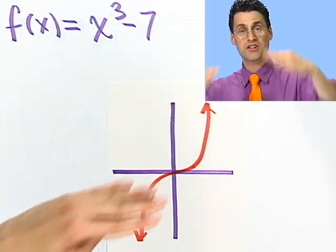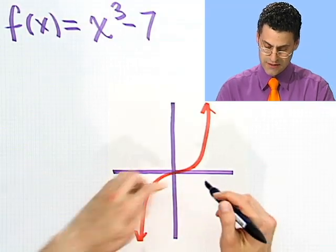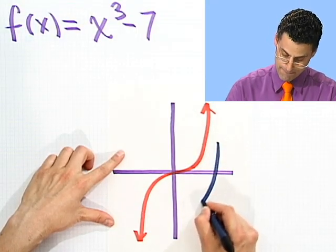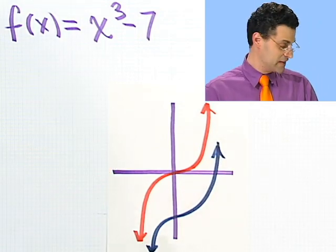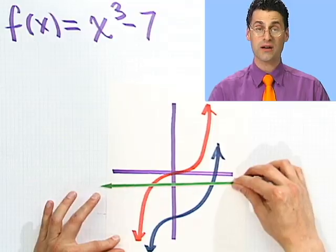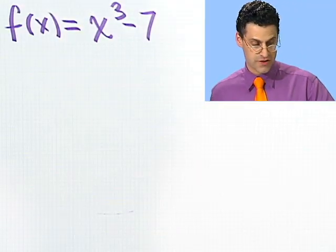And what does minus 7 do? That shifts everything down 7 units. So I just shift the whole thing down 7 units. But you can see that the shifting doesn't change anything with respect to one-to-oneness. This really is one-to-one. So, in fact, this should have an inverse function.